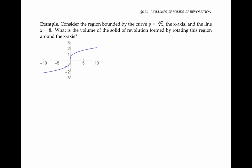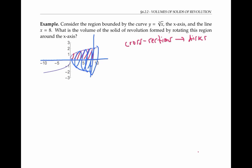As our first example, let's consider the region bounded by the curve y equals the cube root of x, the x-axis, and the line x equals eight. We want to find the volume of the solid of revolution found by rotating this region around the x-axis. Our cross sections here are going to be disks, thin in the x direction, so we're going to be integrating dx. Our smallest x value is zero and our largest is eight, so those are our bounds of integration. We want to integrate pi times the radius squared dx. The radius of our disks is given by the y coordinate on this curve, so r equals y equals the cube root of x.